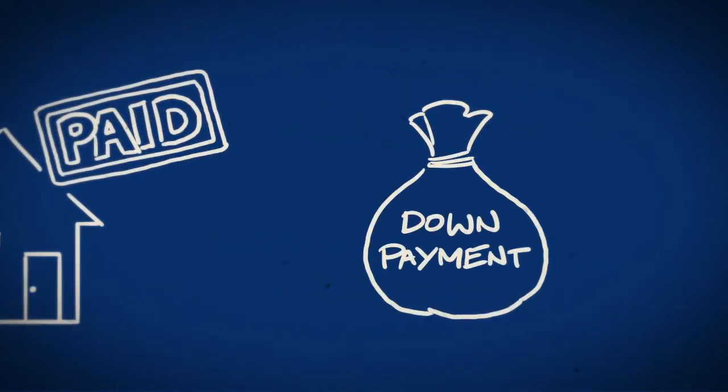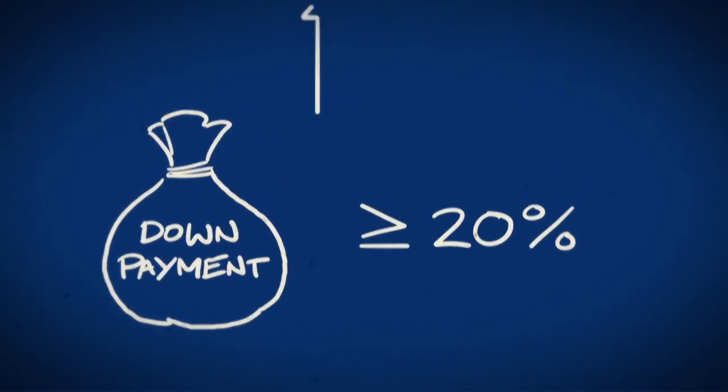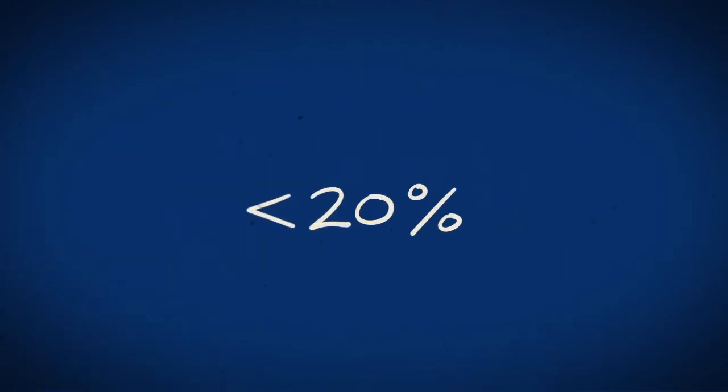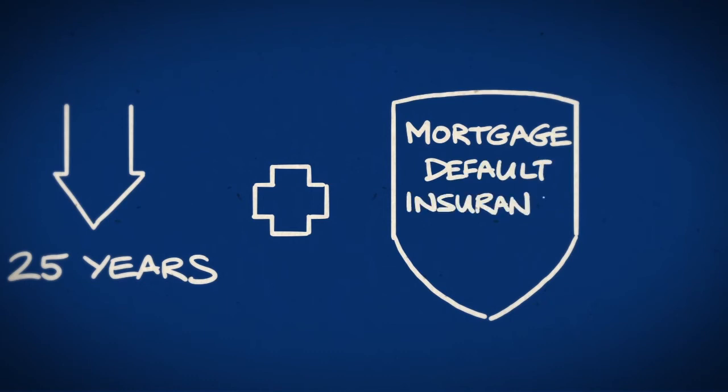If your down payment is 20% of the purchase price of the property or more, you can choose up to a 30-year amortization. If you are putting down less than 20%, the maximum allowable amortization period drops to 25 years, and you'll also need mortgage default insurance.